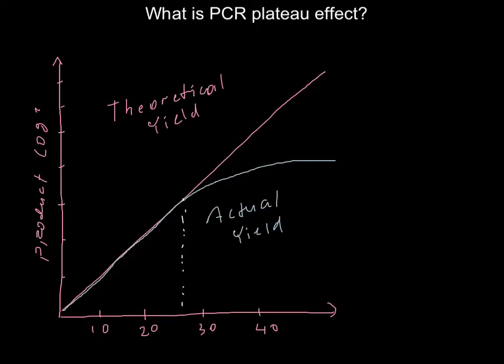So why does this happen? The first explanation is that when we start our thermocycles, we have a lot of initial material used to build new strands of DNA — the nucleoside triphosphates.